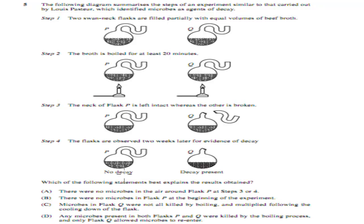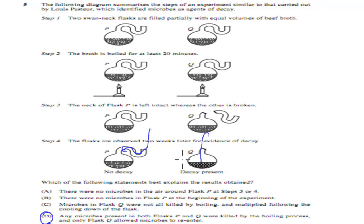Welcome back. The correct answer is D. After the boiling process, all microbes in both flasks were killed. Then the handle of one flask broke off, meaning microbes from the air could enter that flask, whereas in the other the curved neck kept microbes out. In the open flask microbes grew; in the sealed one nothing grew. That's why D was correct.